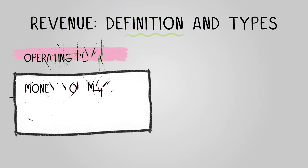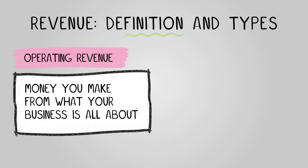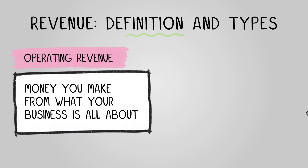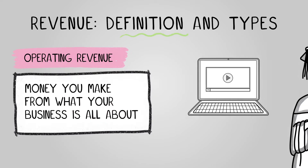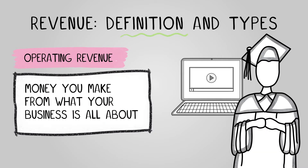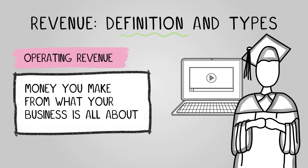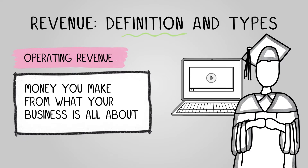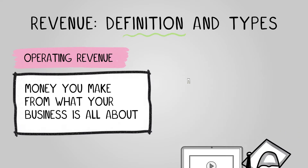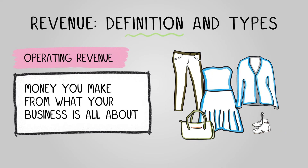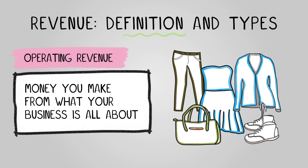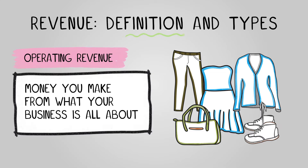Operating revenue is the money you make from what your business is all about. For instance, if you have an e-learning platform like Nowatol Ninja, your operating revenue comes from people subscribing to your courses and buying digital resources. However, if you're a clothing retailer like Primark, you make your operating revenue from selling clothes.